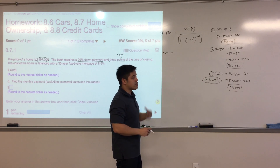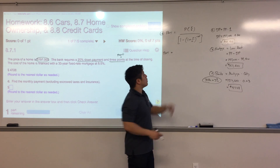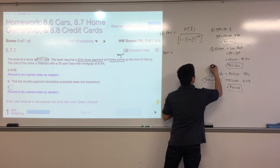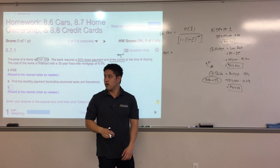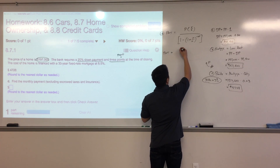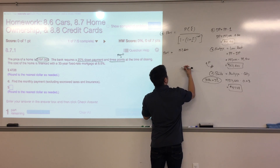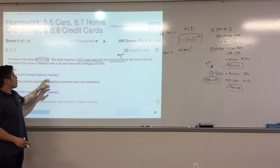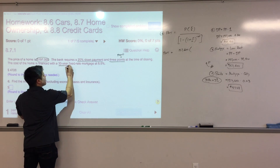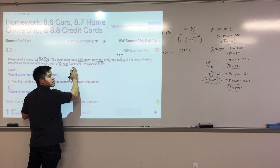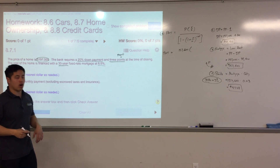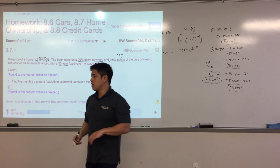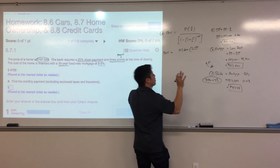P is the amount of your mortgage — $157,600 — because that's the amount you're borrowing. R over N: we have a 30-year fixed rate at 8.5%, so R = 0.085. With a home loan, payments are always monthly, so N = 12, even though the problem doesn't explicitly say it.